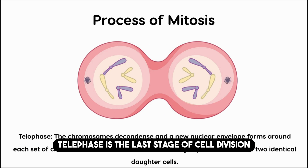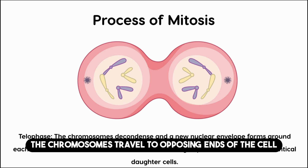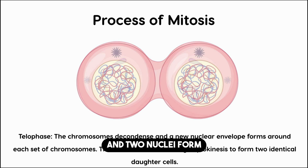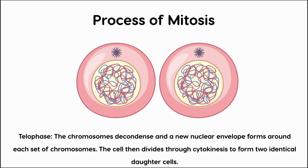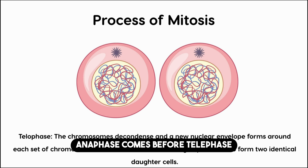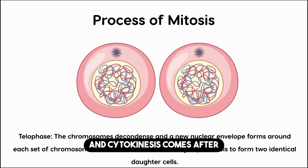Telophase is the last stage of cell division during which the chromosomes travel to opposing ends of the cell and two nuclei form. Anaphase comes before telophase and cytokinesis comes after.